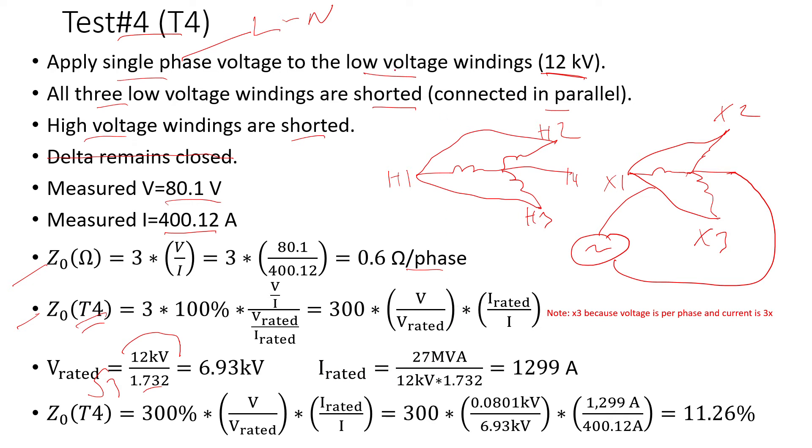I'm using the high voltage and low voltage windings rated at 27 MVA. That's why I'm using 27 MVA to calculate the rated current. Then I just plug the numbers basically to calculate the zero sequence impedance obtained from test 4. In doing that I get 11.26 percent.